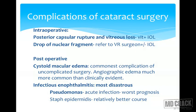Complications of cataract surgery are divided into intraoperative and postoperative. The most notable intraoperative complications include posterior capsular rupture and dropped nucleus fragment. Posterior capsular rupture may or may not be associated with vitreous loss; management depends on the degree of rupture and amount of vitreous loss. A dropped nucleus fragment requires urgent referral to a retina surgeon for complete vitrectomy and fragment removal.